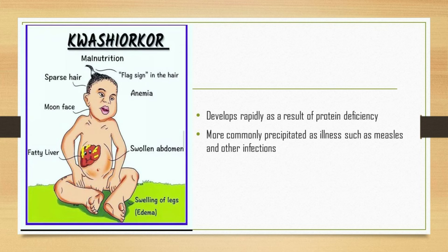Kwashiorkor is rare in countries where most people have access to enough food and adequate amounts of protein. It is mostly found in developing countries with high rates of poverty and food scarcity. Poor sanitary conditions and a high prevalence of infectious diseases also set the stage for malnutrition. Kwashiorkor can affect all ages but is most common in children, especially between the ages of three to five—an age when many children have recently transitioned from breastfeeding to a less adequate diet that is higher in carbohydrates but lower in protein and other nutrients.